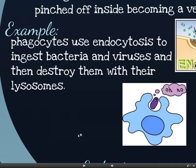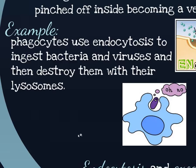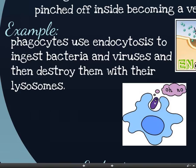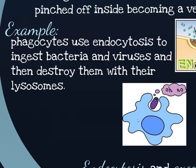Phagocytes, which are part of our immune system, use endocytosis to engulf bacteria and viruses and destroy them. They engulf the bacteria into what's called a phagosome — just a special name for that little pocket. Inside they have lysosomes, small bubbles that contain digestive enzymes and acids. The lysosome fuses to the phagosome, mixing all the contents together, and the bacteria are killed and broken down by the enzymes and acids in that lysosome. Anything of value is pumped out into the cytoplasm, and then the waste is expelled.